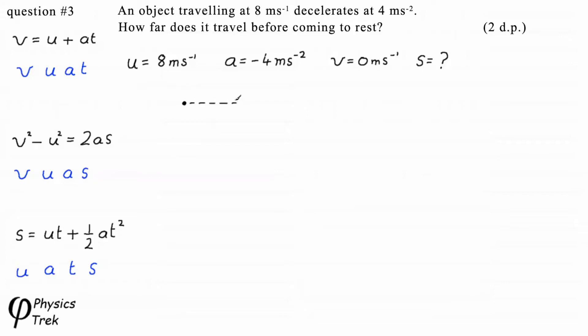And at our diagram, U, the initial velocity, is 8 metres per second.